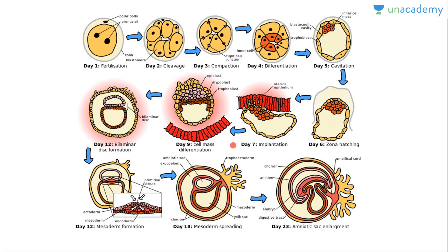On day seven, implantation occurs where the embryo comes in contact with the uterine epithelium. Then we have inner cell mass differentiation into epiblast and hypoblast. At day 12, bilaminar disc formation occurs where the embryo is divided into two laminas. Then mesoderm formation, mesoderm spreading, and amniotic sac enlargement follow.